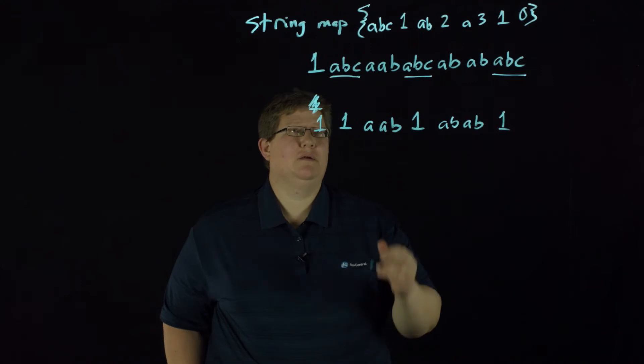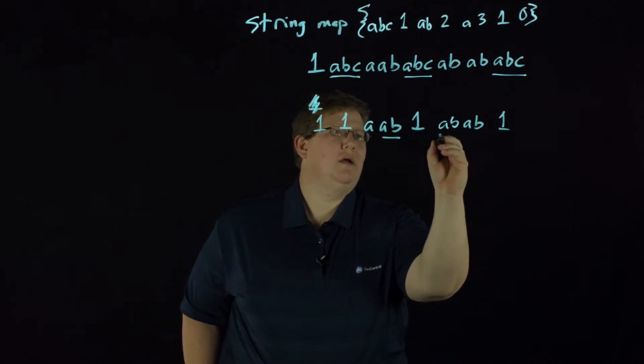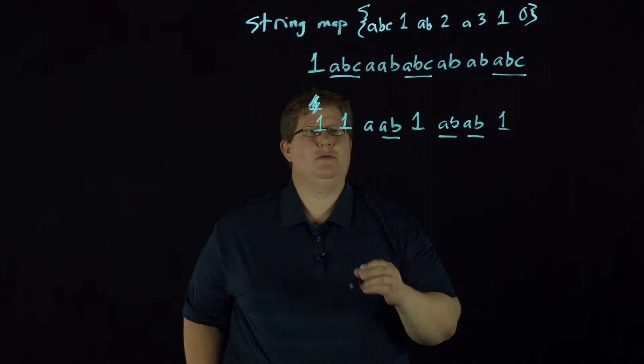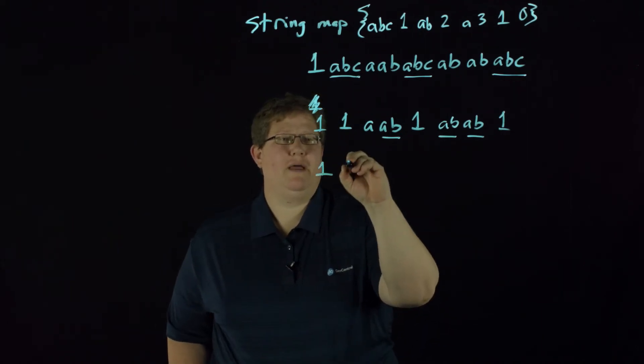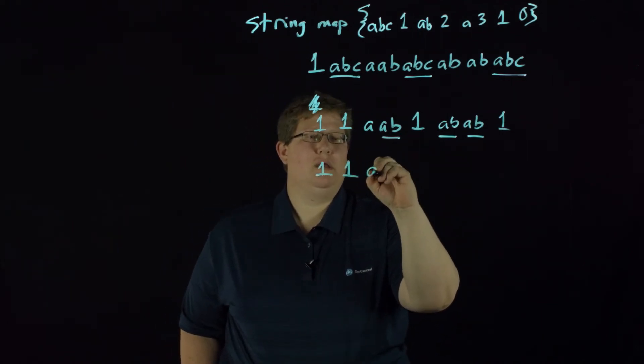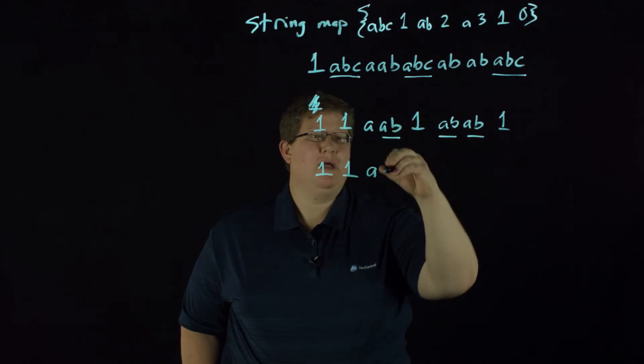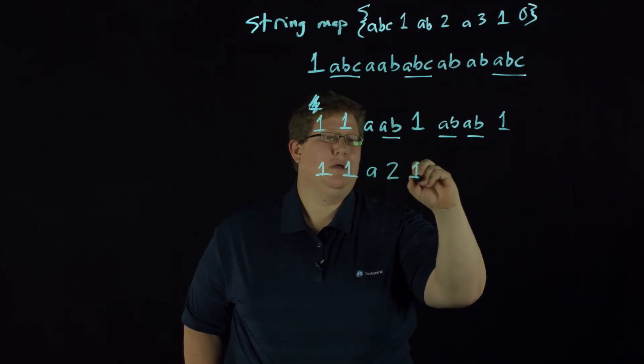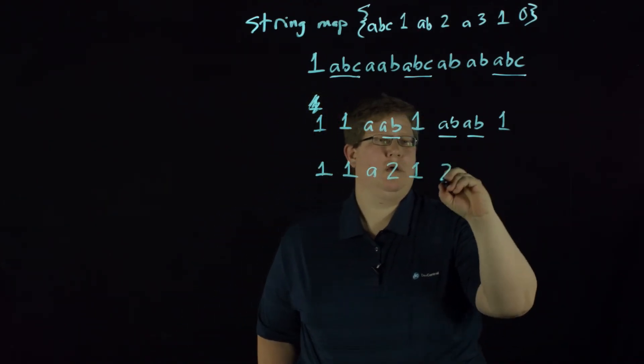Then our second mapping we have AB. Well that matches here, here, and here, and AB matches to two. So if we carry this down we have one one A, and then AB matches to two, and we have our one and we have two two.